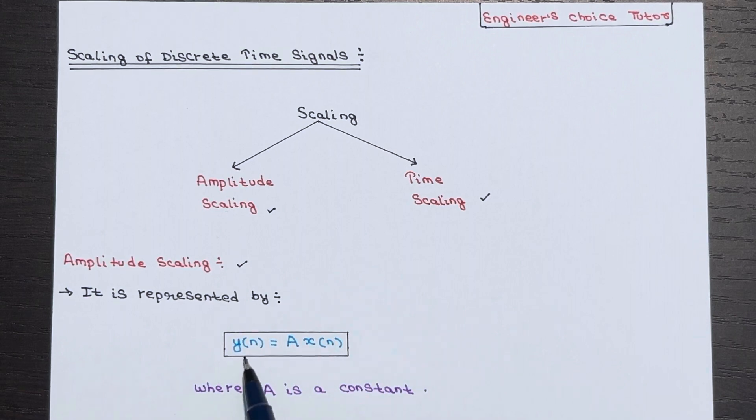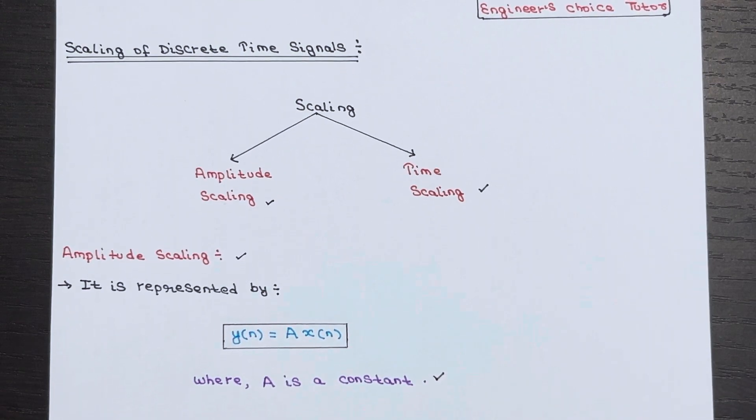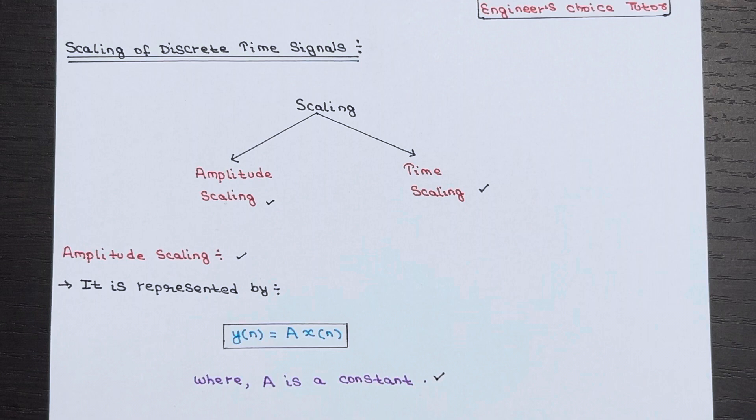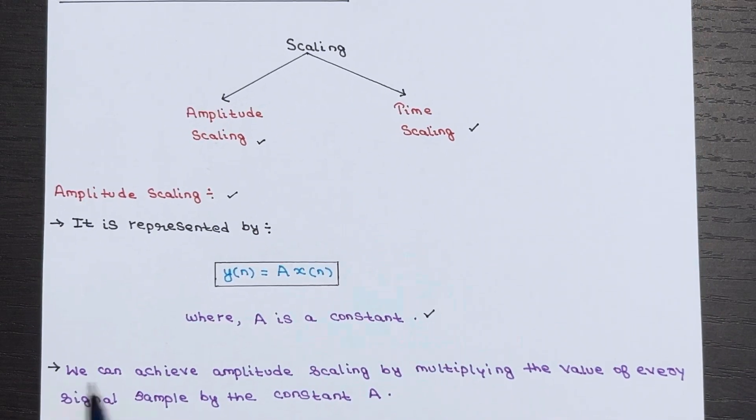y(n) = A × x(n), where A is a constant. To achieve amplitude scaling, we simply multiply the value of every signal sample by the constant A.